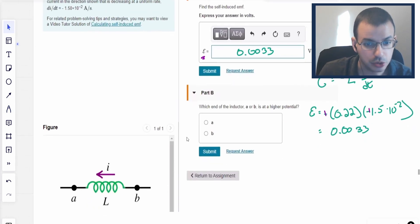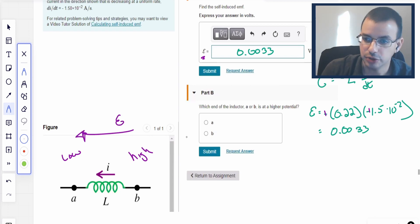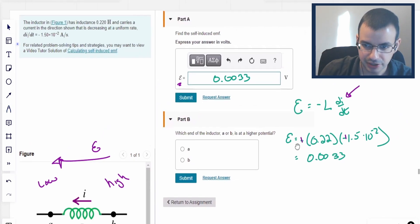which end of the inductor, a or b, is at a higher potential? This is going to be high potential, this is going to be low, because the emf is in the same direction as the current, and that's what that means by that negative sign.